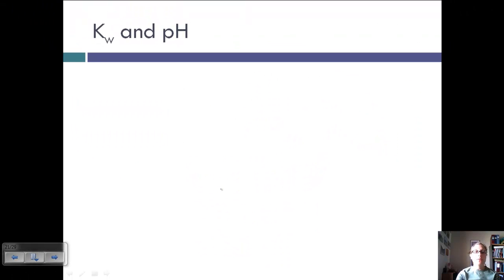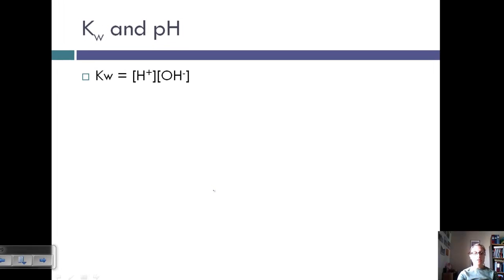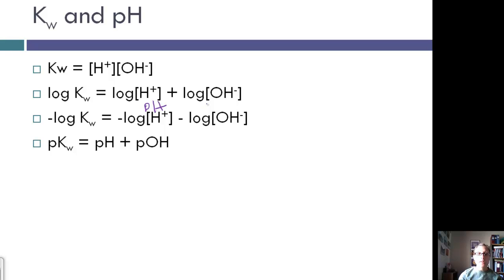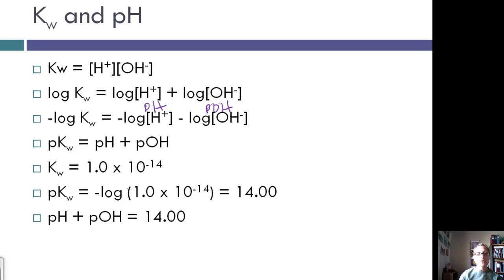Let's look at the relationship between Kw and pH. Kw is the concentration of H plus times the concentration of OH minus. We can break this up into saying that the log of Kw is the log of H plus plus the log of the OH concentration. Then we can make all of these negative. Negative log of H plus is equal to pH. Negative log of OH minus is equal to pOH. So we can rewrite this to say that pKw is equal to the pH plus the pOH. Since Kw is equal to 1 times 10 to the negative 14, pKw is negative log of 1 times 10 to the negative 14, which is 14. And so this means that pH plus pOH is equal to 14. So if you know one, you know the other.